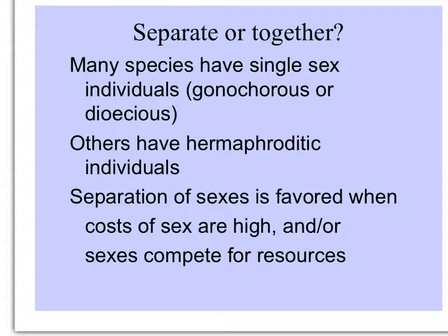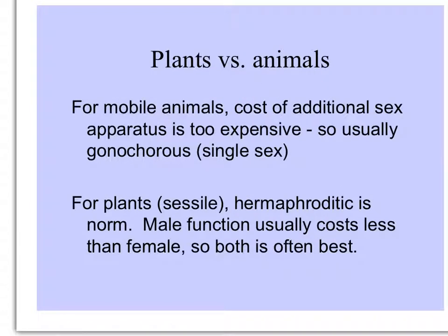It appears that when the costs of sex are high, or the sexes compete for resources, sometimes separate sexes have been selected. In animals, sometimes it's too expensive to have that additional sexual apparatus to haul around or to reproduce in both directions, so often animals are gonochorous with single-sex individuals.